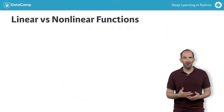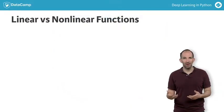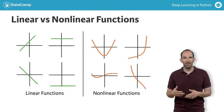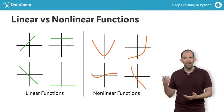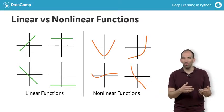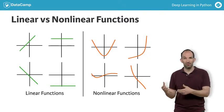An activation function allows the model to capture non-linearities. Non-linearities, as shown on the right here, capture patterns like how going from one child to two children may impact your banking transactions differently than going from three children to four children.